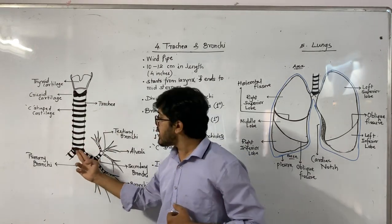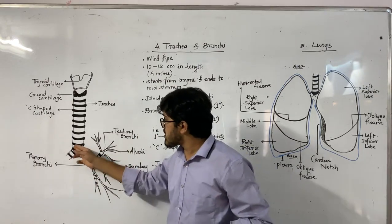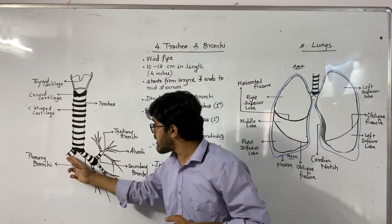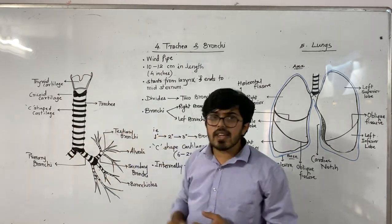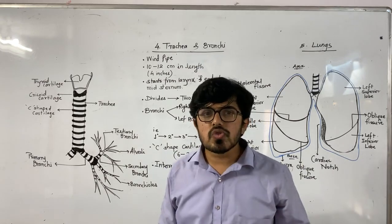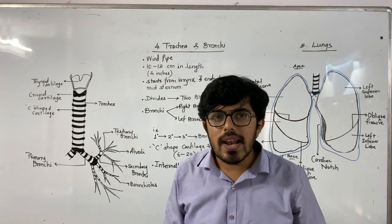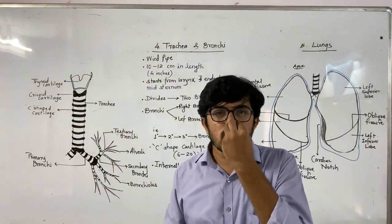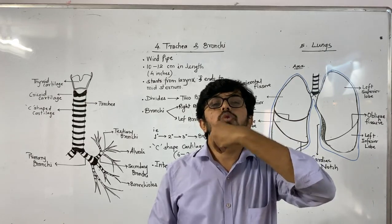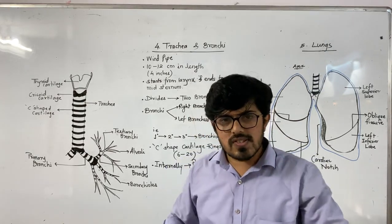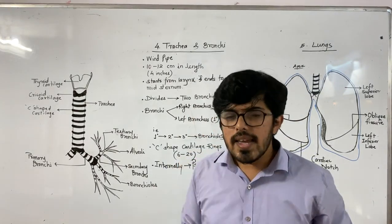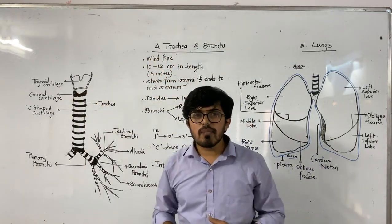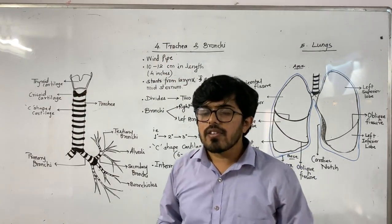At mid-sternum the trachea divides into two branches — right bronchus and left bronchus, collectively called bronchi. The main function of trachea is to transport air during respiration. Air taken in through nostrils passes through pharynx, then trachea, and into the lungs; the same path is followed during exhalation. Therefore, trachea is also called the windpipe.